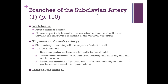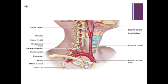Off the subclavian we also have the internal thoracic artery, which travels the same path as the vein to the anterior thoracic wall, right next to the sternum on either side. Here we see the vertebral artery going all the way up through the transverse foramen, the thyrocervical trunk, and the internal thoracic artery heading to the anterior thoracic wall.